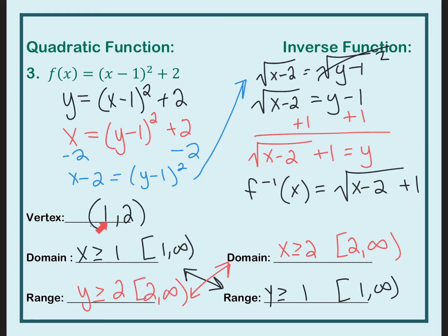The vertex helps with the domain restriction. For this quadratic I restrict the domain to only the right side, so my domain goes from 1 to infinity — x is greater than or equal to 1. My range is y greater than or equal to 2 since the graph faces up with positive A and the vertex y-value is 2. The domain of my function equals the range of the inverse, and the range of my function equals the domain of my inverse function.